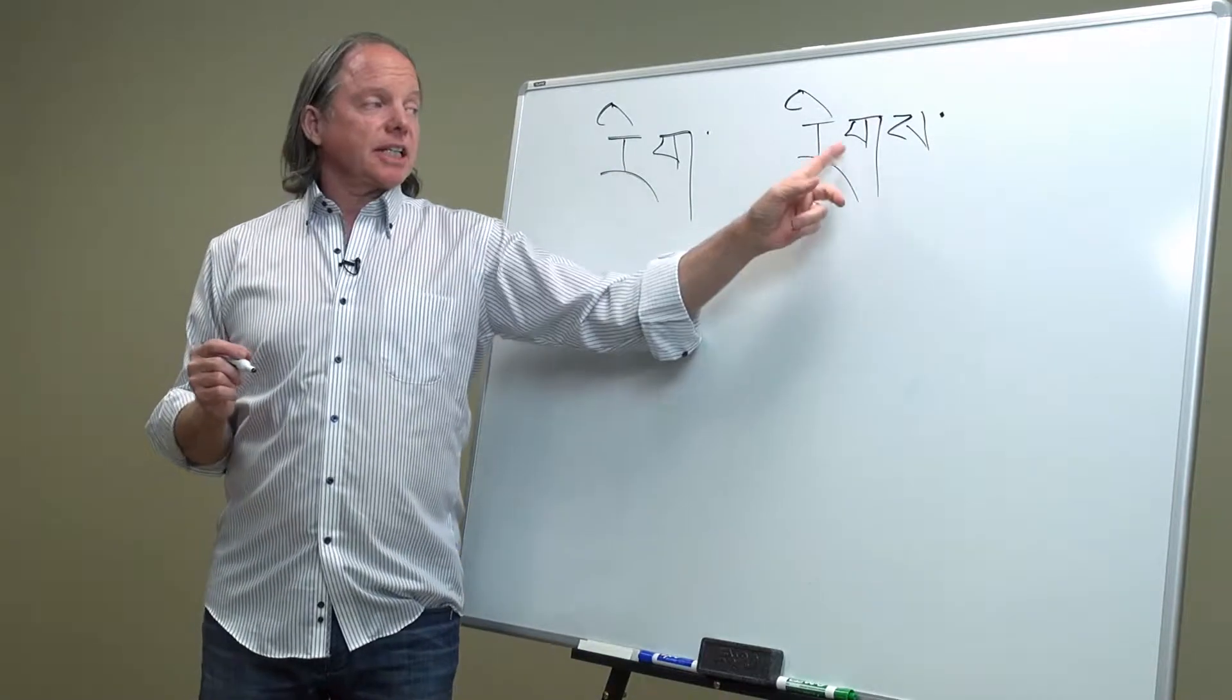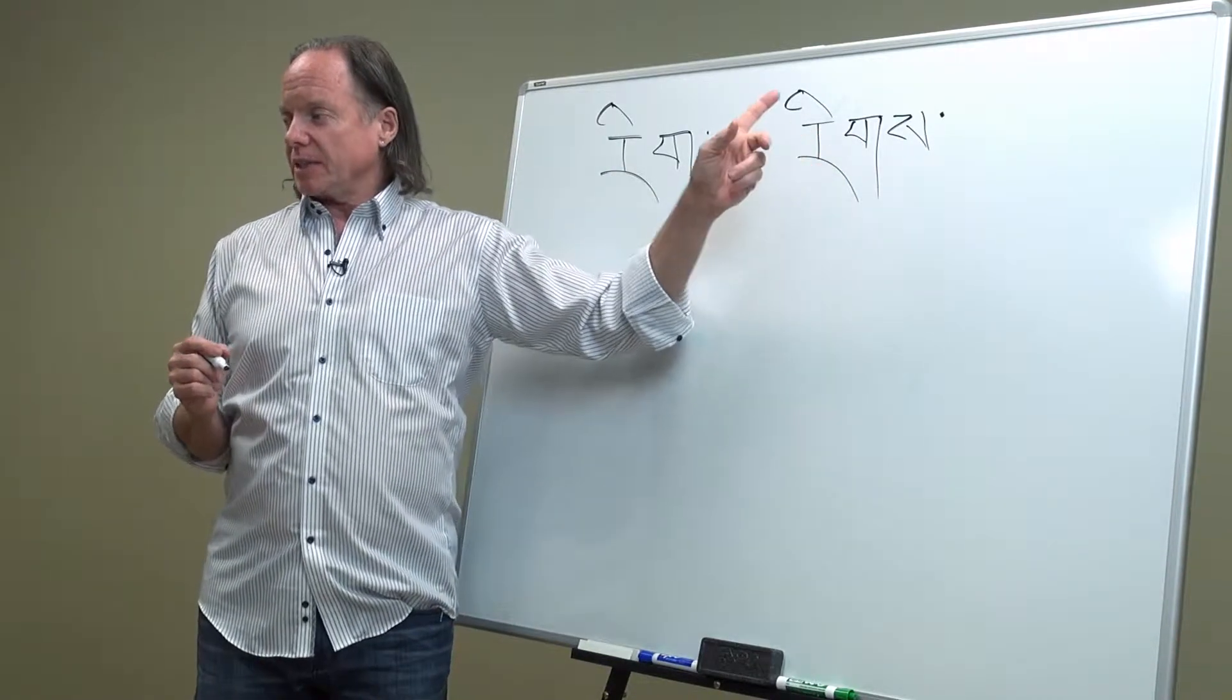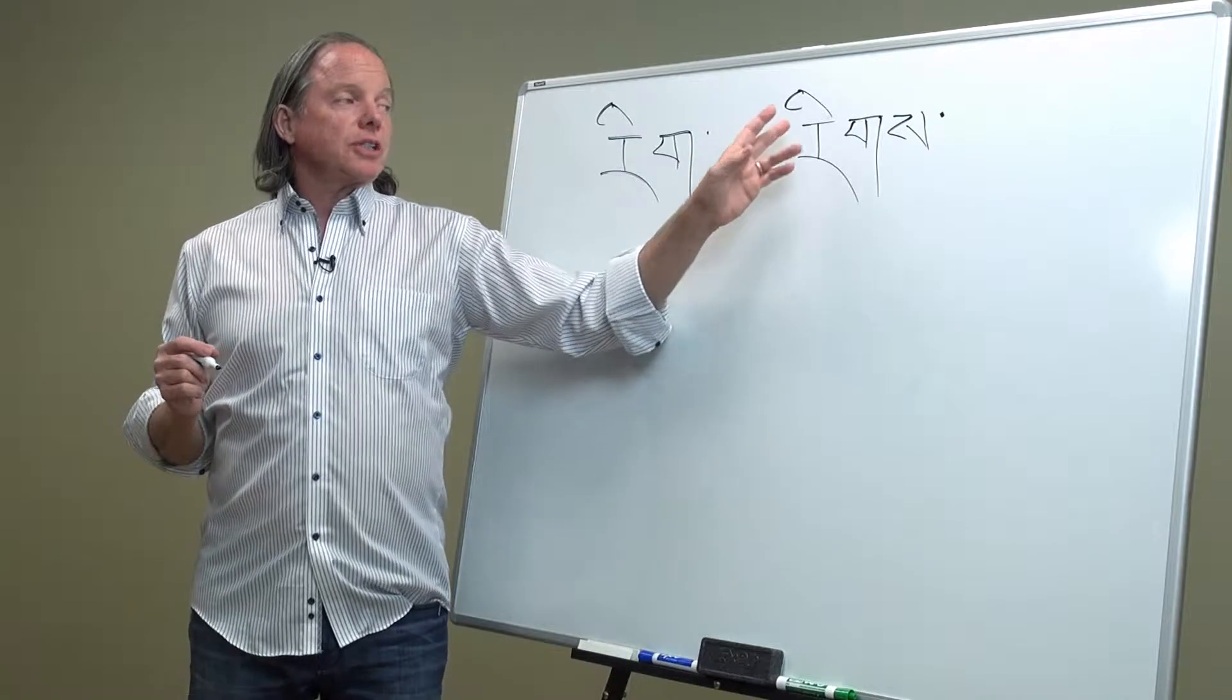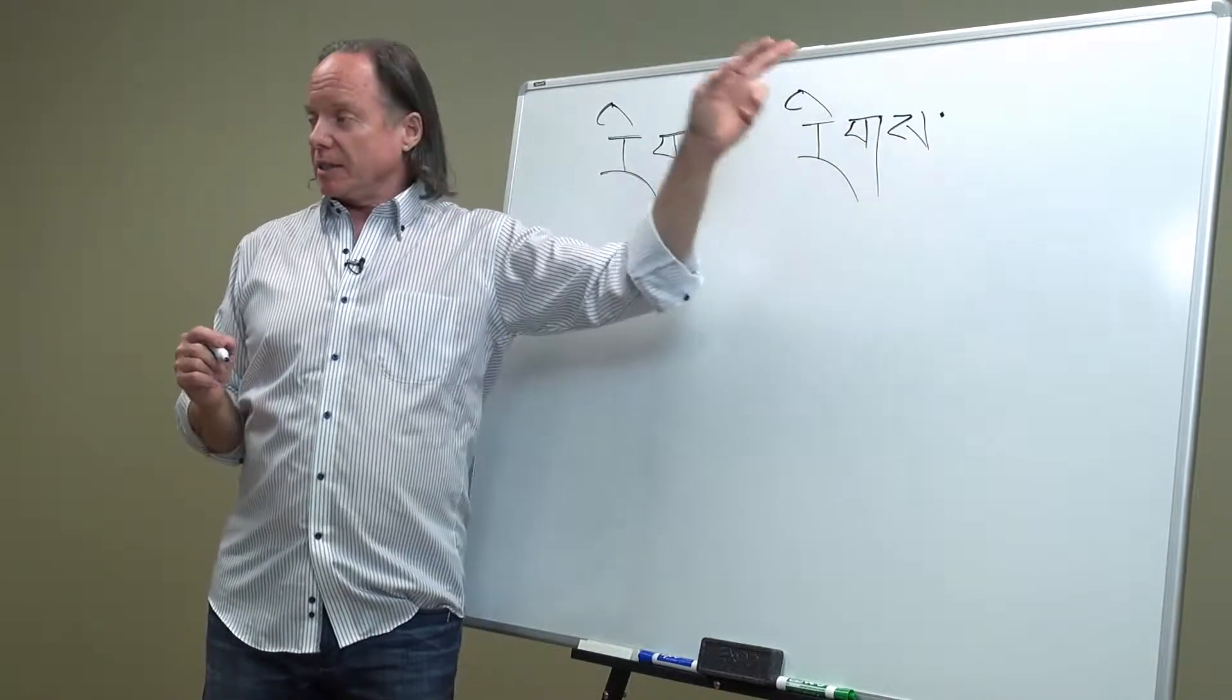So you don't say ra, giku, ri, rik, sa, rik. You don't say it that way. You say ra, giku, ri, ka, sa, rik.